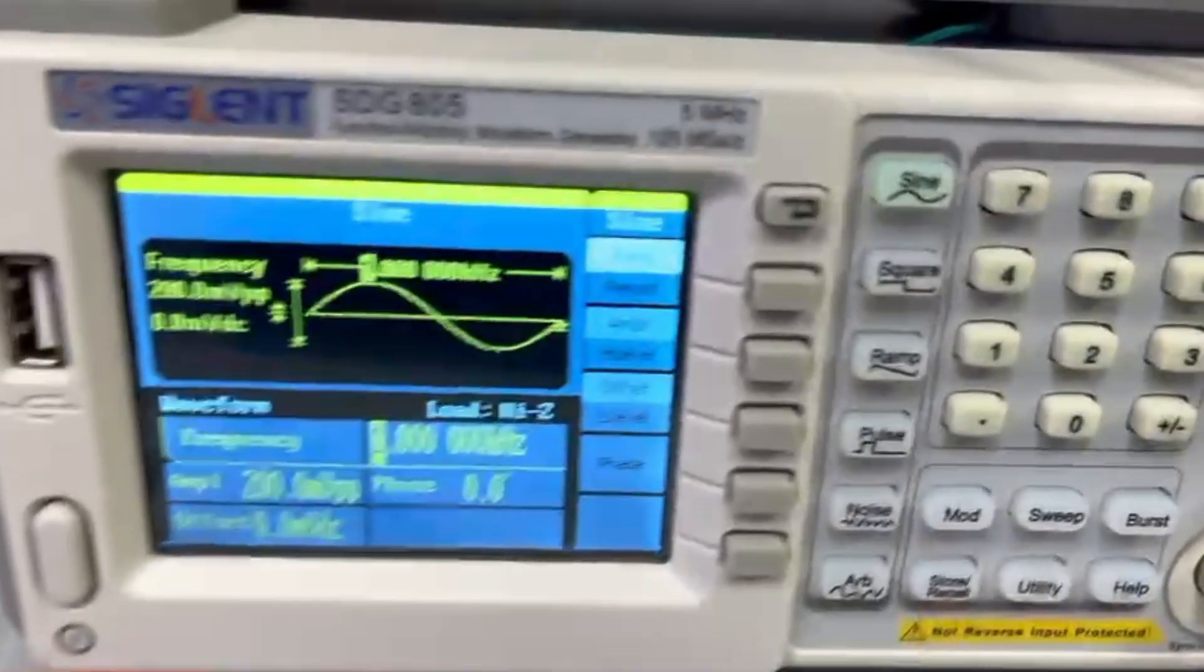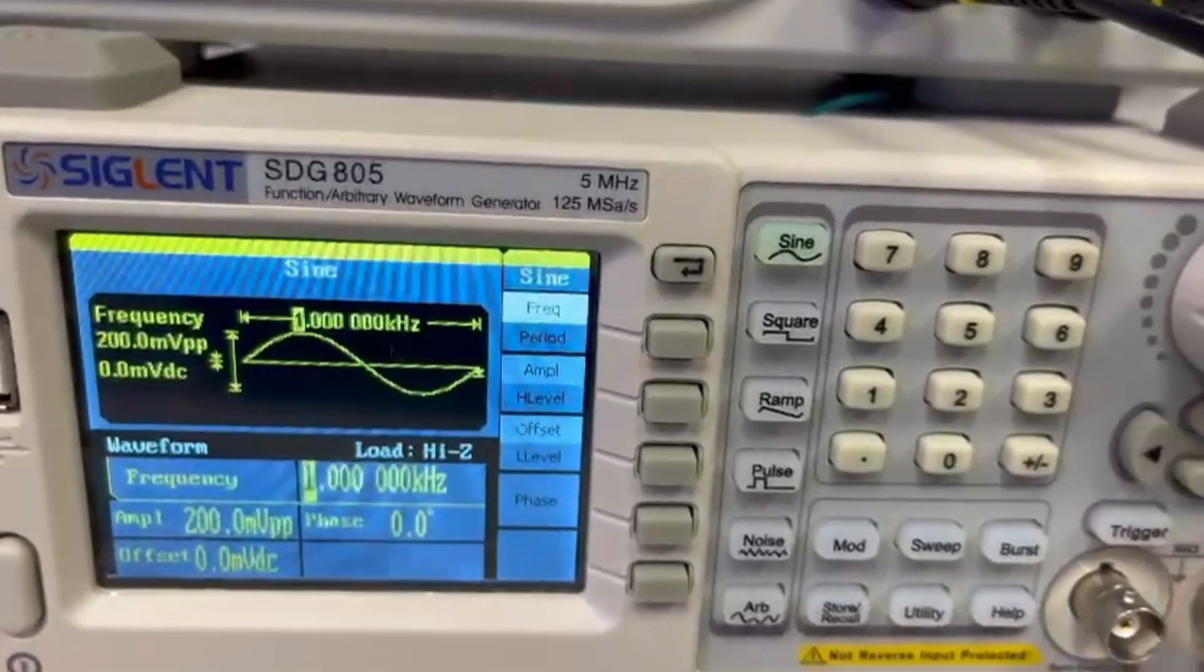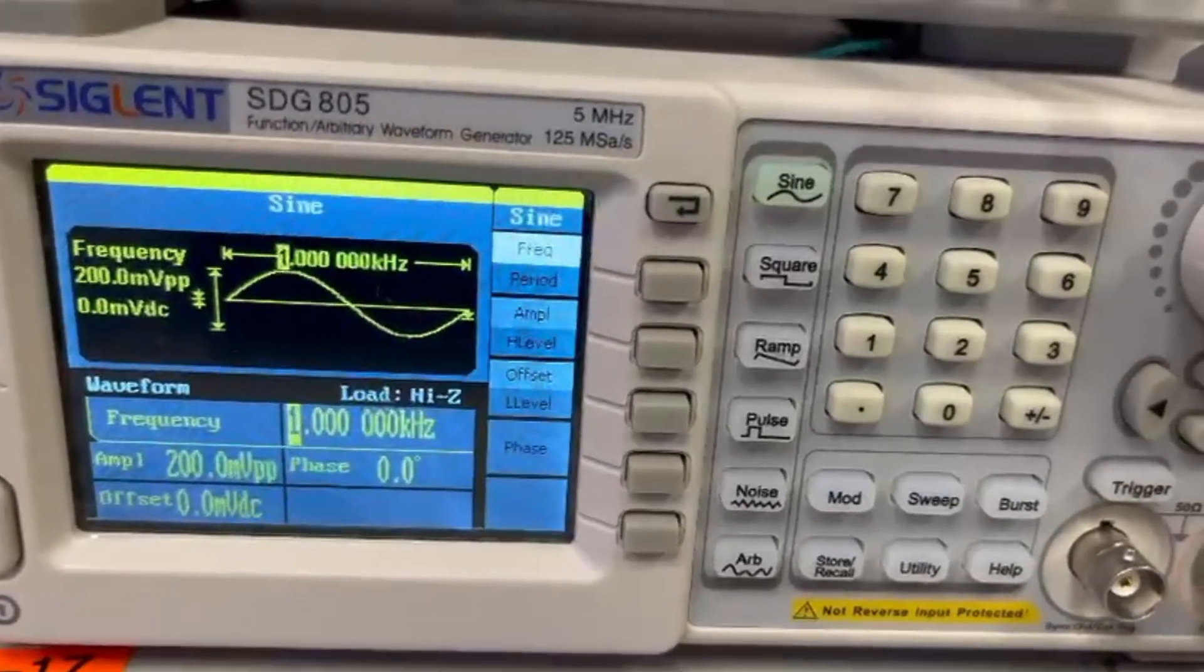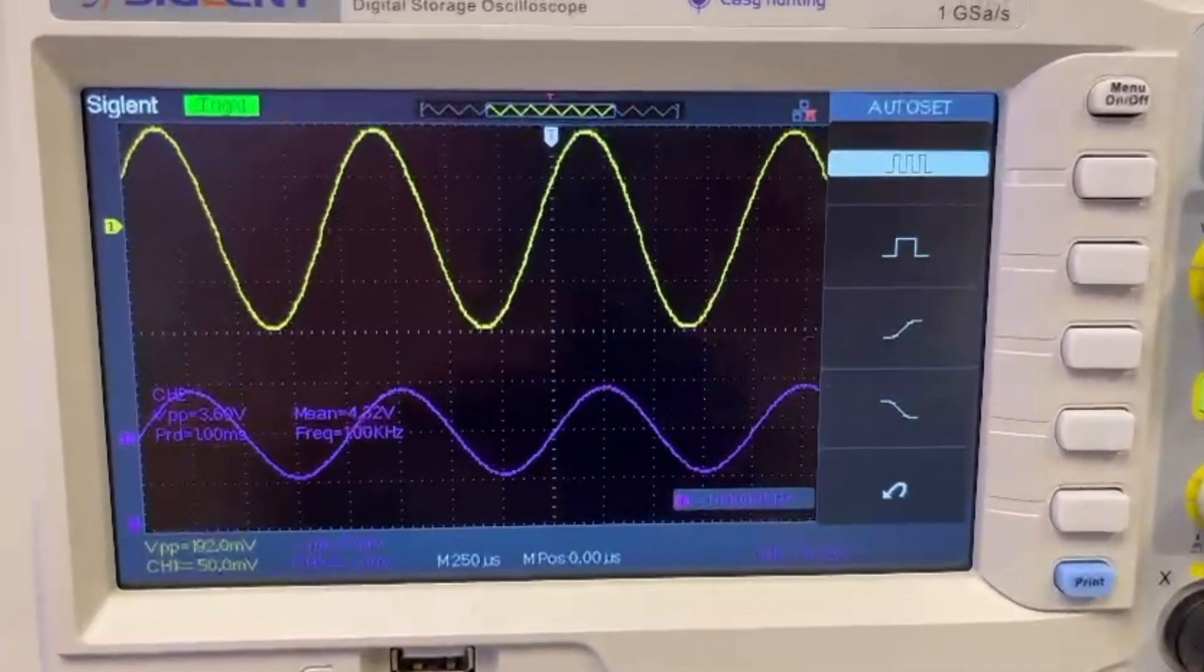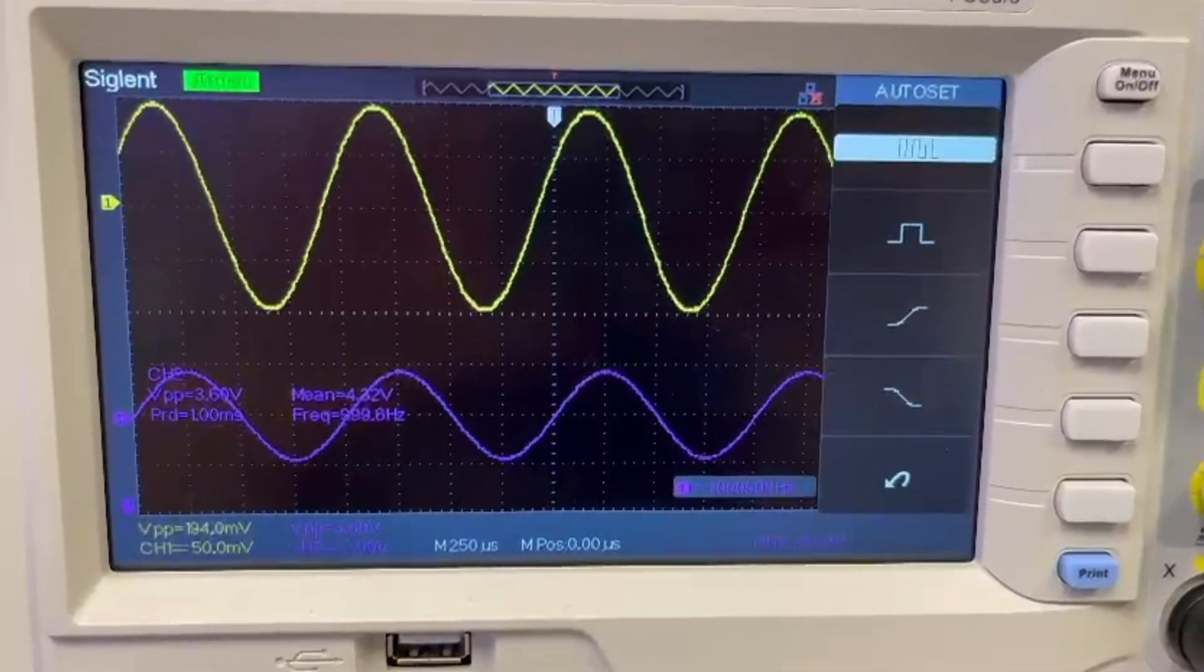By pressing channel 1 probe to test point 1, we can see that the input is 4 volts multiplied by 50mV per division, giving us 200mV peak to peak. And placing channel probe at test point 2, we can see that the output voltage is 4V.